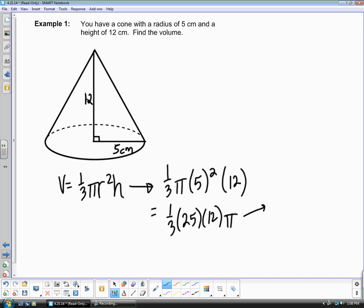This reduces down to 100 pi or 314 centimeters cubed. Again, it doesn't matter if you keep it in terms of pi or if you multiply through pi or if you use 3.14.